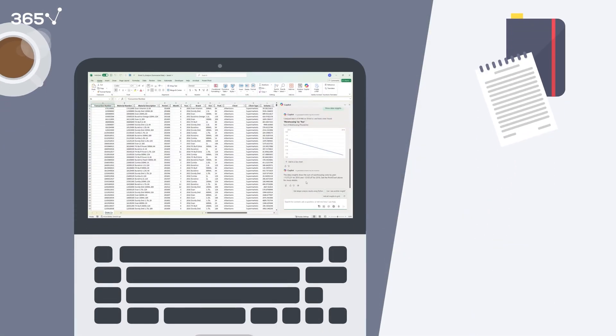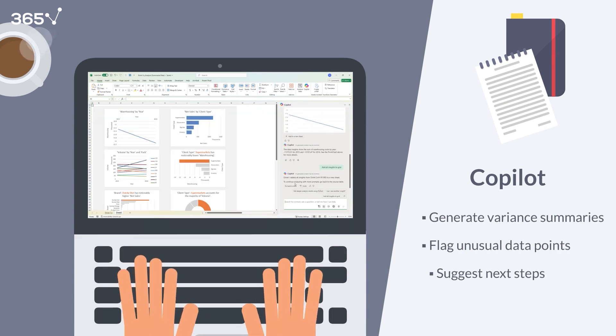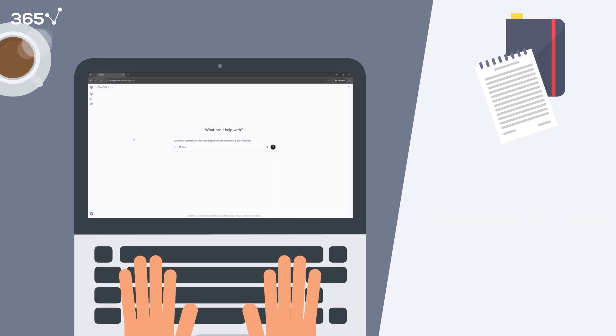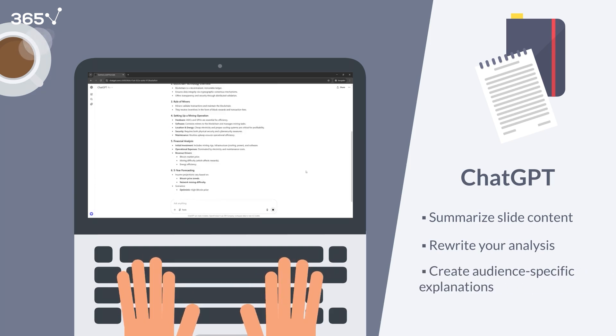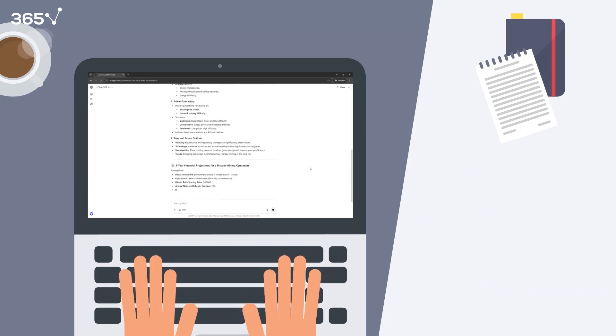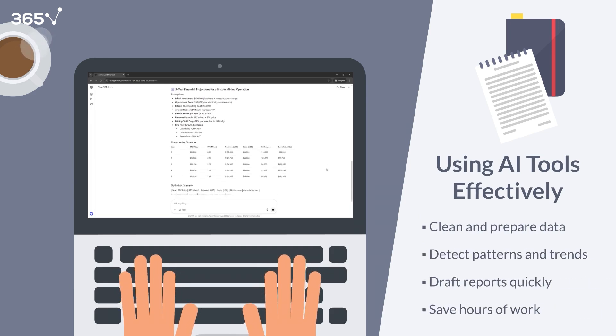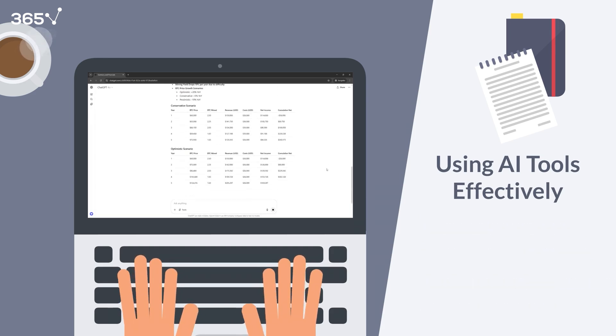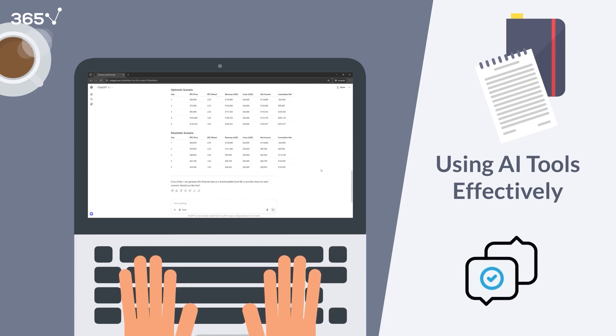Let's say you're reviewing financials. Copilot can generate variant summaries, flag anomalies, or even suggest next steps, all within Excel. Or you're prepping a presentation. ChatGPT can help you summarize slides, rewrite your analysis, or generate alternative explanations for different audiences. AI tools can clean data, spot patterns, draft reports, and save hours. But only if you know how to ask the right questions and where to apply them.